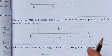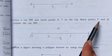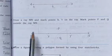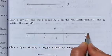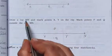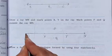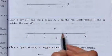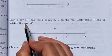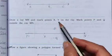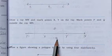Question number 7: Draw a ray MN and mark points X and Y on the ray. Also mark points P and Q outside the ray MN. So draw ray MN with arrow, place X and Y on the ray, and place points P and Q outside the ray.